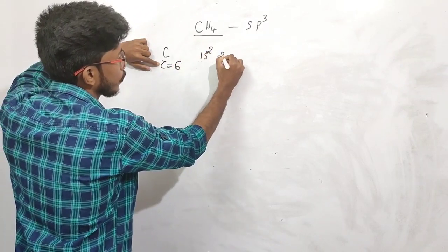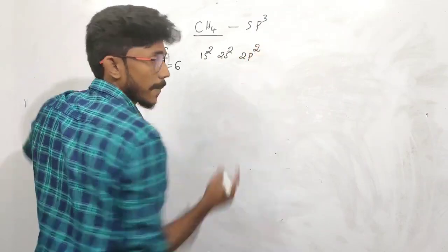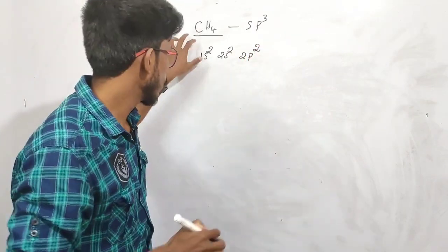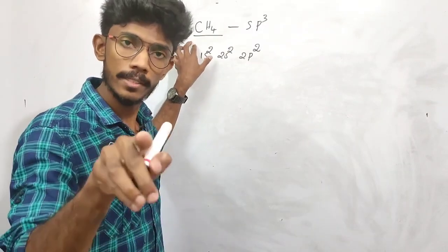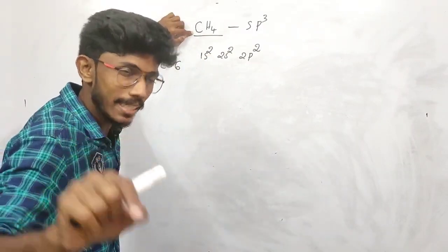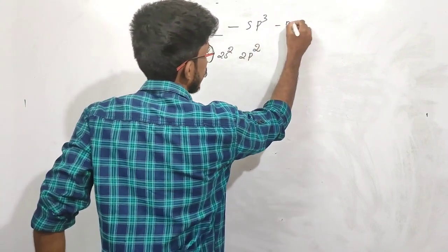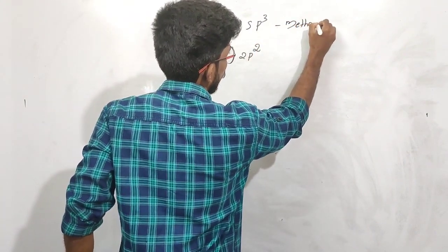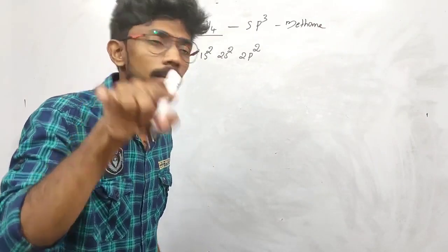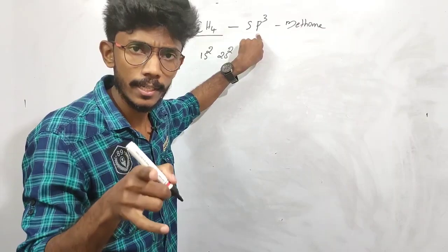Carbon has atomic number 6. Its configuration is 1s2, 2s2, 2p2. Now this compound — the central atom is carbon. CH4's name is methane. Central carbon atom undergoes SP3 hybridization. Okay, clear?